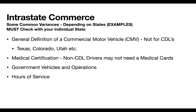Typically, federal law sets the standard and states aren't allowed to have a lesser law, except in DOT where certain allowable variances exist. Check with your individual state. For example, the general CMV definition can be changed: Texas doesn't consider a vehicle a commercial motor vehicle for intrastate until 26,000 pounds — the same weight CDLs kick in. Colorado doesn't consider a combination a commercial motor vehicle until 16,001 pounds or more. Utah copies federal regulations and uses 10,001 pounds or more. Make sure you check out our video on identifying your fleets and determining commercial motor vehicles for interstate.